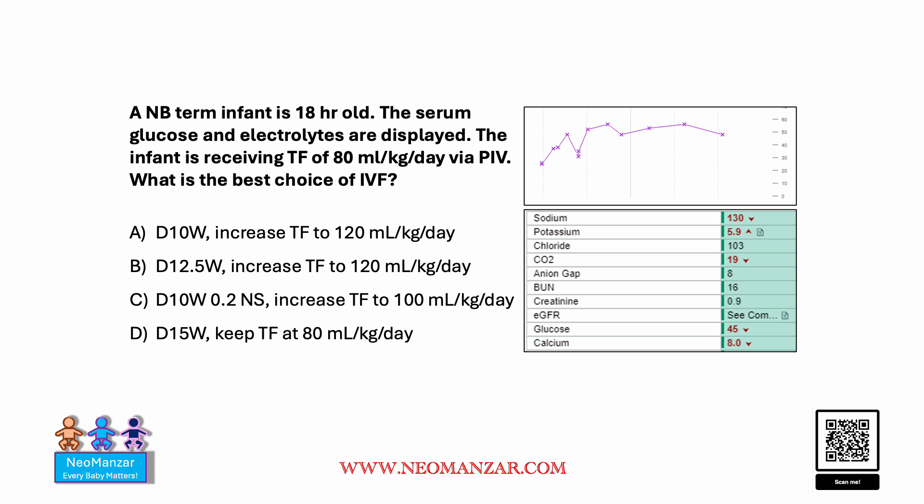Basically they want you to choose the best solution here. We see a low glucose trend, so we can follow that, and we see hyponatremia. So basically we have to choose a solution which has dextrose and normal saline. So which is the right answer here?